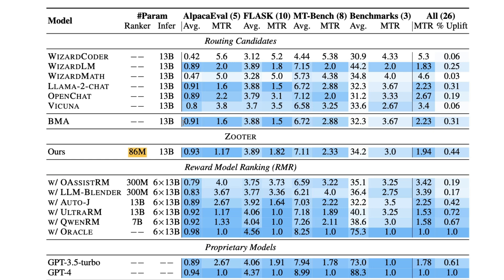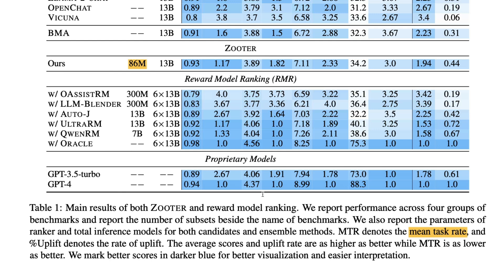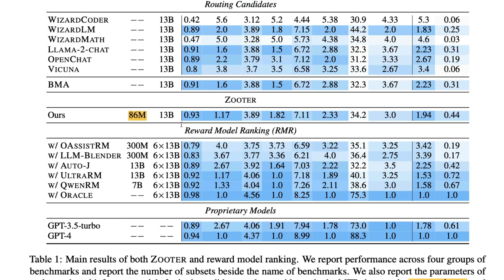It's not the most highly accurate solution — you can still see RMR-based solutions consistently doing better than ZOOTER, and proprietary models like GPT-3.5 Turbo and GPT-4 doing better still. But the key point is those solutions are not controllable and are computationally very expensive. With lesser compute — something you can run on a consumer-grade GPU — coupled with the router, you get a really solid model.